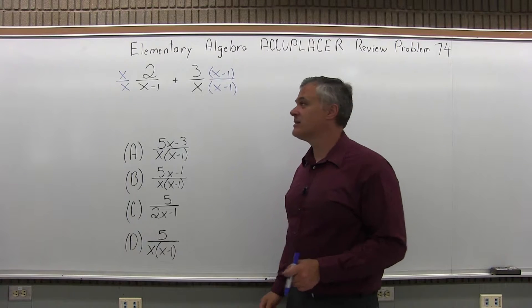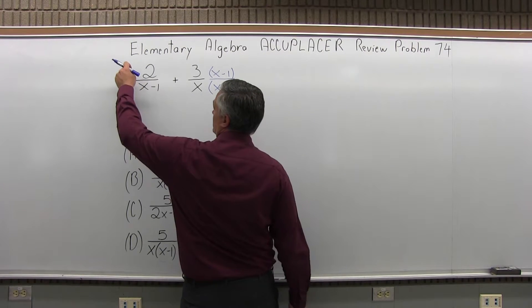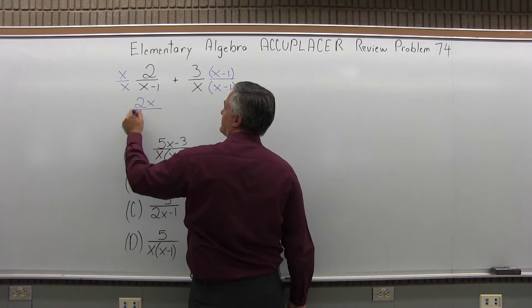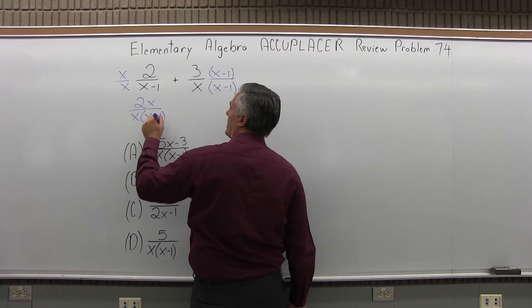So now the first fraction, on top x times 2, I can write as 2x. And the denominator, x times x minus 1.